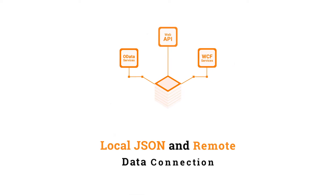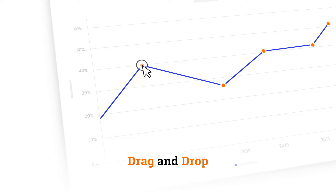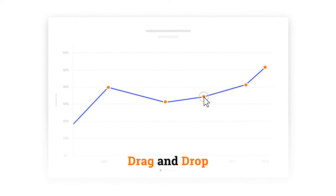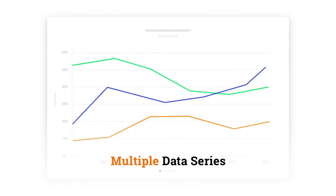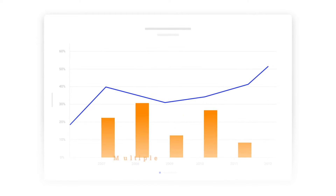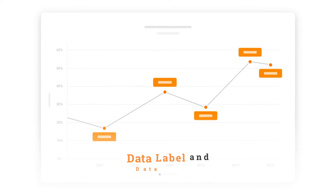The Data Manager helps to connect charts with data from anywhere, whether it's in local JSON or a remote web server. Change the Y values of the data points dynamically by dragging and dropping the rendered point. Easily add multiple data series to a chart of the same or a different series type. Using the trendline feature, visualize the trend of your data.